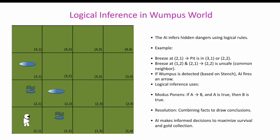Logical inference in Wumpus World: the AI infers hidden dangers using logical rules. For example, Breeze at 2,1 means a pit is in 3,1 or 2,2; Breeze at both 1,2 and 2,1 means 2,2 is unsafe as a common neighbor. If the Wumpus is detected based on stench, the AI fires an arrow. Logical inference uses modus ponens — if A implies B and A is true, then B is true — and resolution, combining facts to draw conclusions, so the AI makes informed decisions to maximize survival and gold collection.